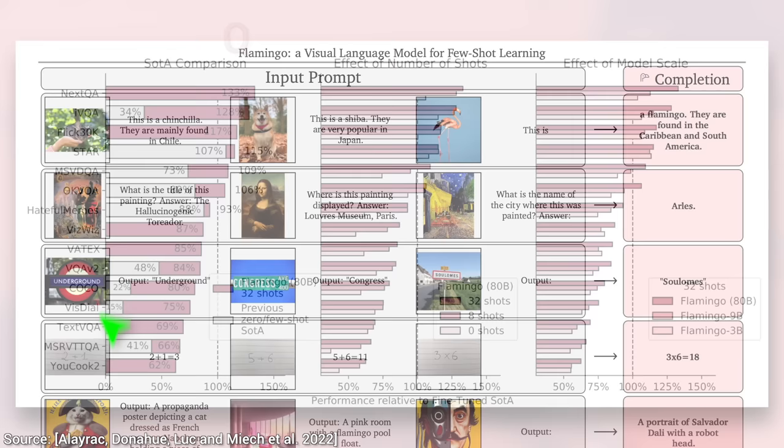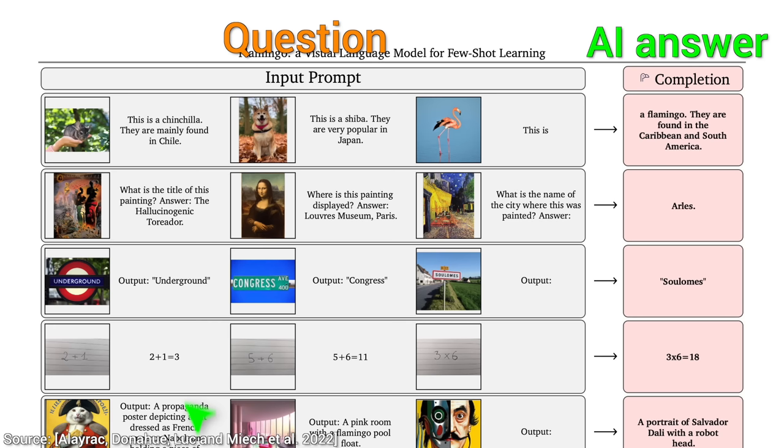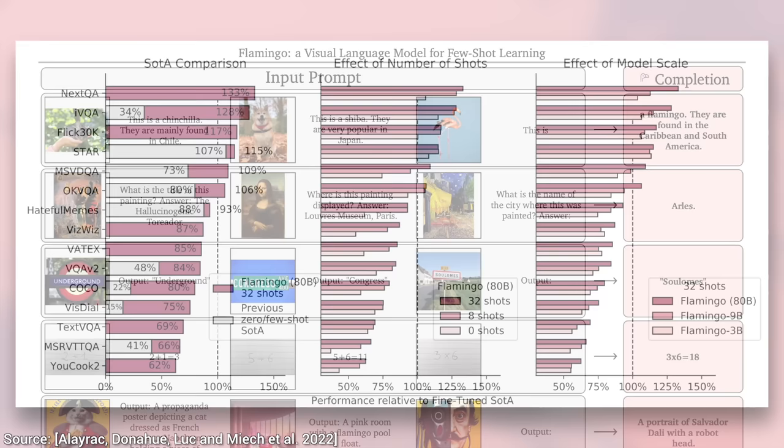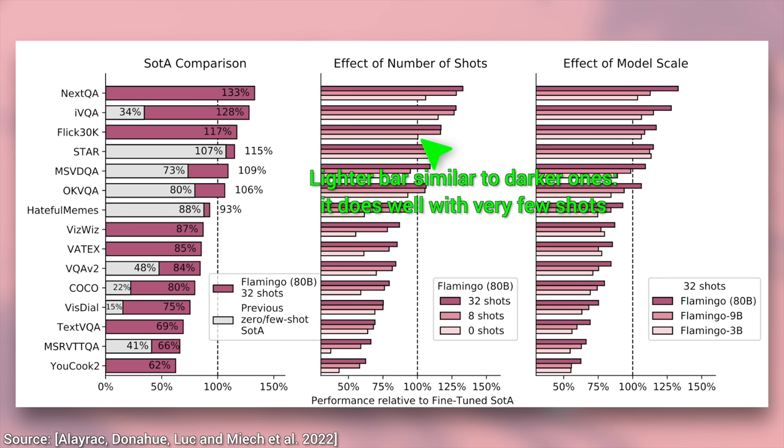Question number two. How does it improve with the number of shots? You remember the flamingo example, we had two shots here. And the answer is that it gets it early, it does not need tens of examples to understand what we are trying to ask. Its zero-shot performance is formidable, so it can do things it has never been taught before that is incredible, but even in other cases, after just a few examples, it really gets it.